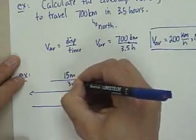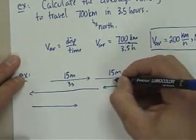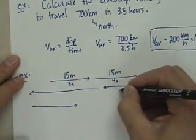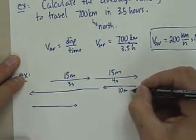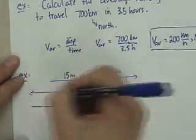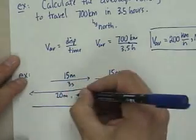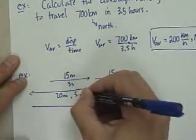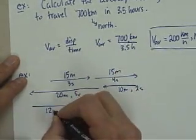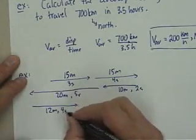We'll say that it took 3 seconds to do it. Let's say that this is another 15 meters. And this one took 4 seconds to do it. This one is going to be 10 meters, which is going to have taken 2 seconds. And this one, it looks like 20 meters. That's going to have occurred in 5 seconds. And finally, this last one, let's say this one is 12 meters, and it occurs over 4 seconds as well.